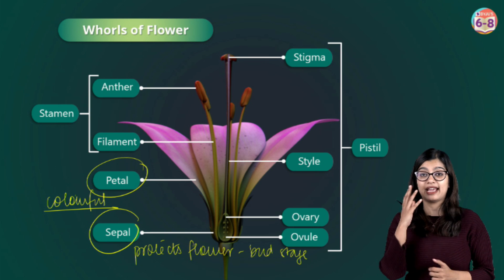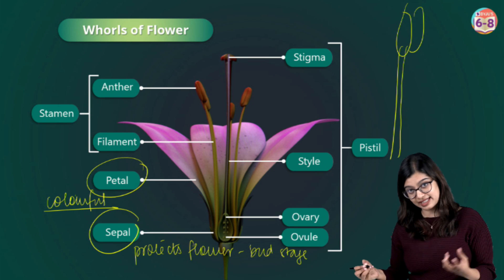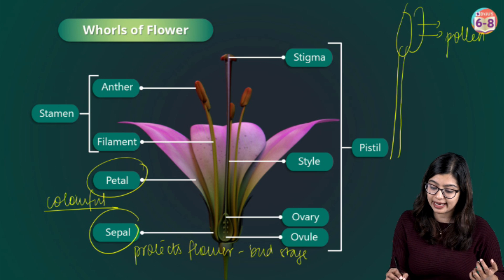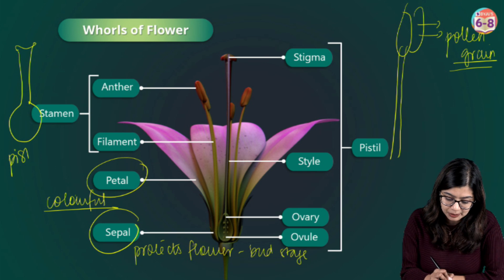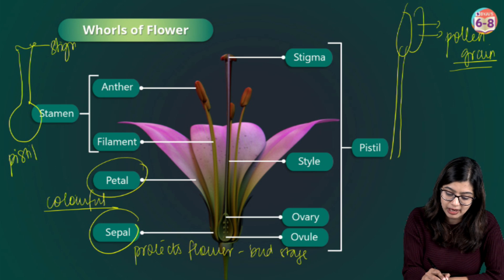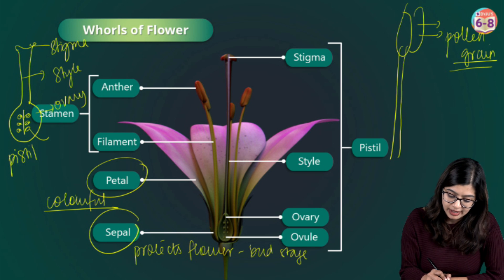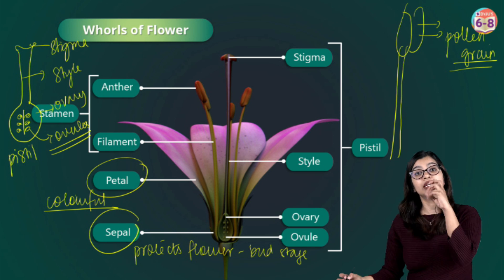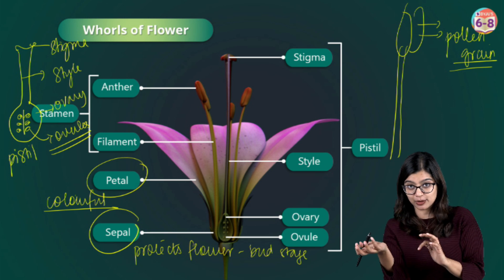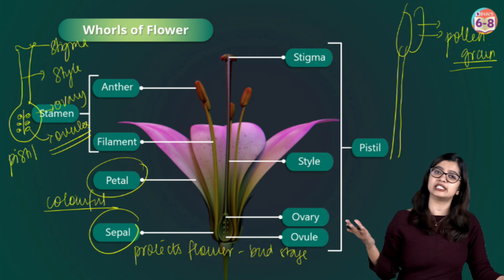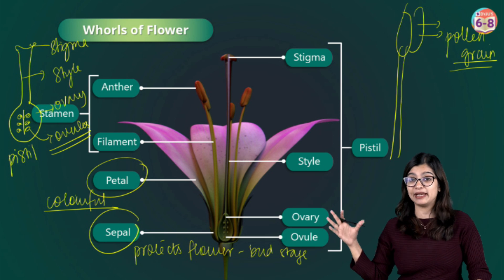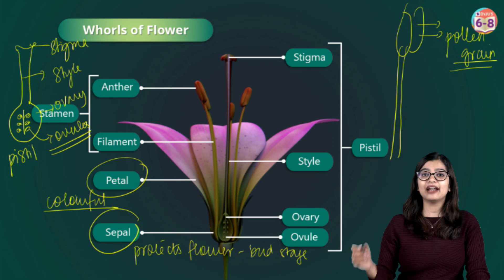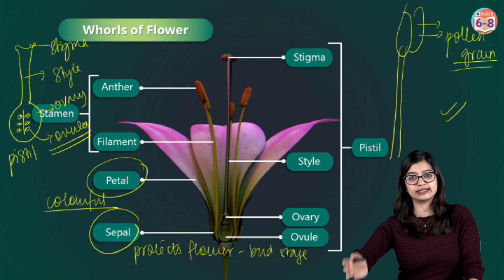Flowers have male and female reproductive structures. The male reproductive structure is called the stamen, which produces specialized structures called pollen grains involved in reproduction. The female reproductive part is called the pistil. The pistil has a top portion called the stigma, a long tubular part called the style, a swollen base called the ovary, and inside it has ovules. These ovules will eventually develop into seeds, while the ovary ripens to become a fruit. Flowers come in different shapes, sizes, and colors, and they all contribute to producing fruits and seeds, thereby propagating the plants.